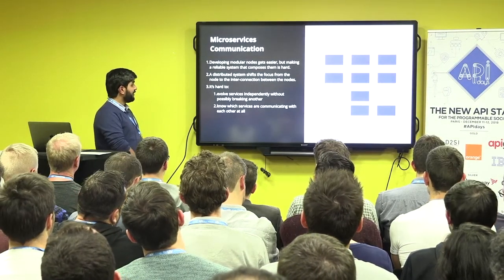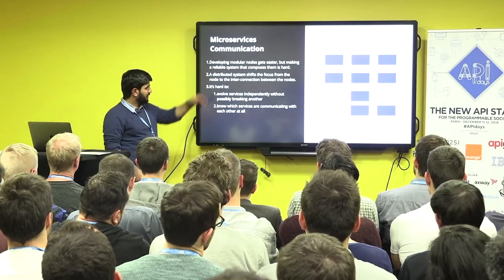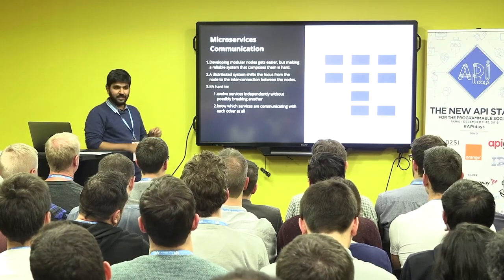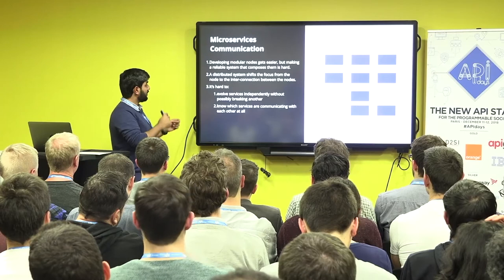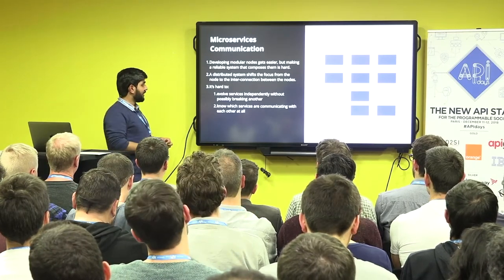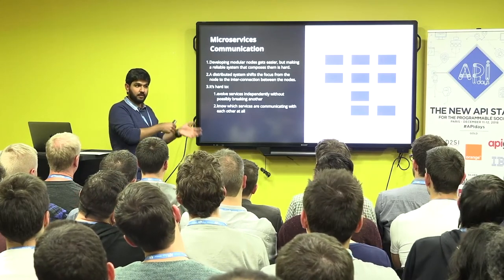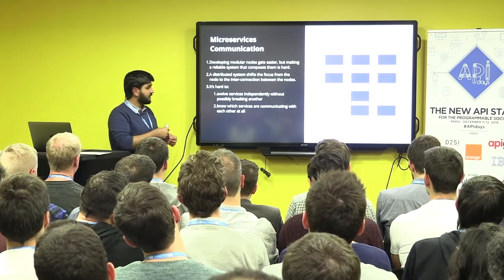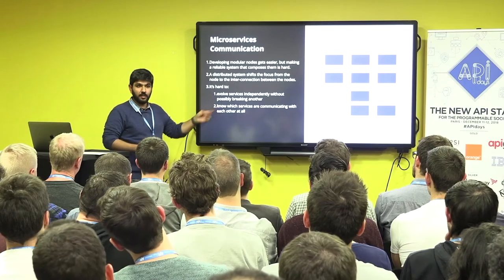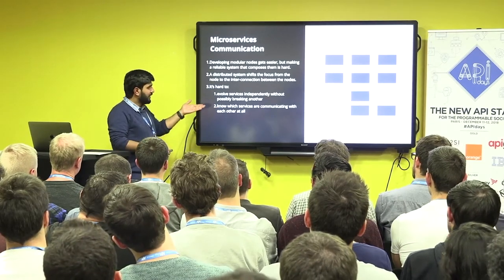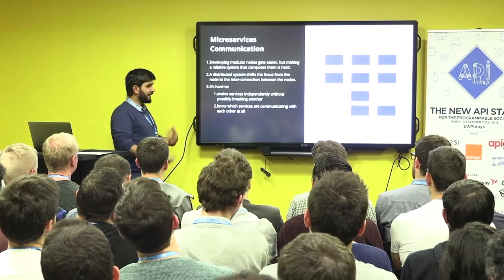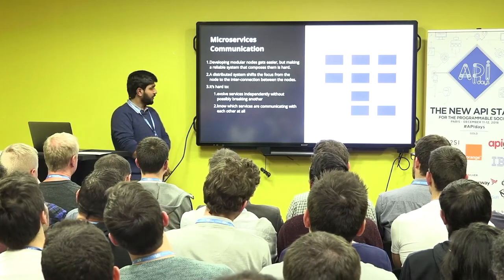So why does this happen? In a simple microservices architecture with nine-odd services, what you've fundamentally done is built a system where individual nodes are easier to develop, but composing them reliably becomes hard. Your entire focus shifts from building the nodes to building the interconnections between nodes. It's really hard to evolve services independently without breaking another service — especially when you don't always know which services are communicating with each other.